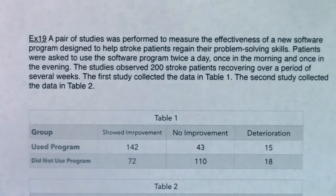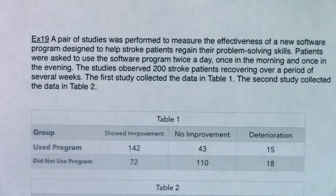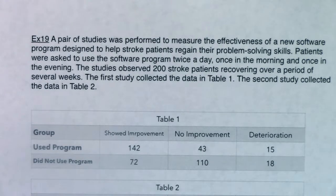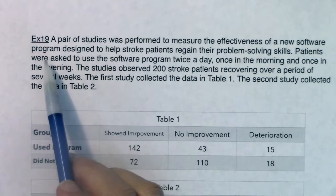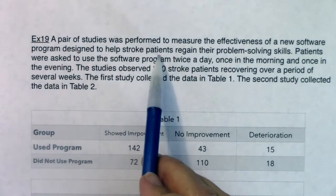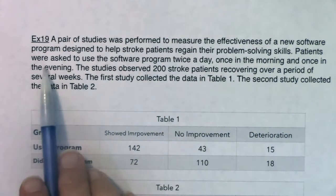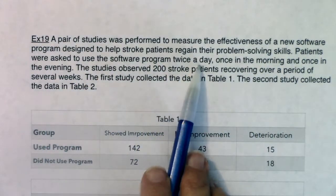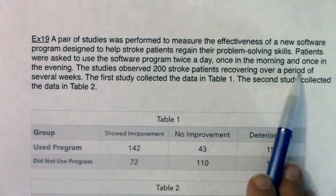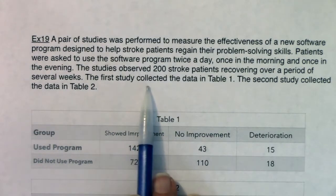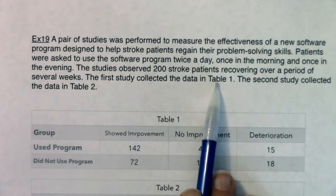Okay, our last example. Chapter 1 and Chapter 2 are really long because we're just establishing the world that statistics lives in — laying that groundwork, getting all that vocabulary taken care of. Example 19: a pair of studies was performed to measure the effectiveness of a new software program designed to help stroke patients regain their problem-solving skills. Patients were asked to use the software program twice a day, once in the morning and once in the evening. The studies observed 200 stroke patients recovering over a period of several weeks. The first study collected the data in Table 1, the second study collected the data in Table 2.